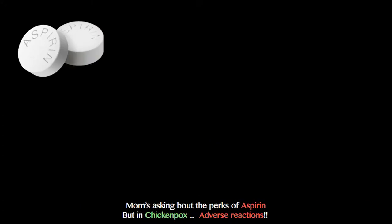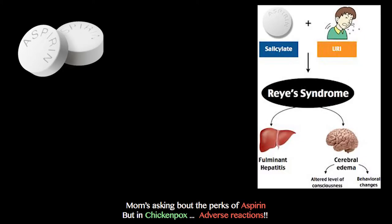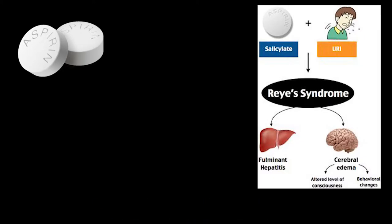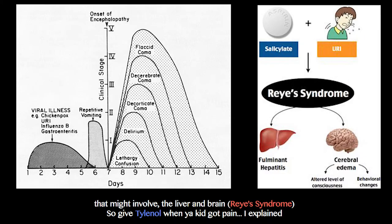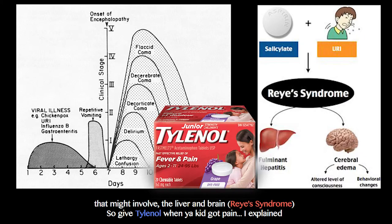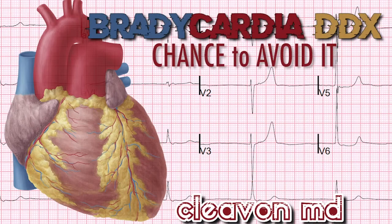Mom asked about the perks of aspirin, but in chicken pox there are adverse reactions that might involve the liver and brain — Reye's syndrome. So give Tylenol when your kid's got pain.